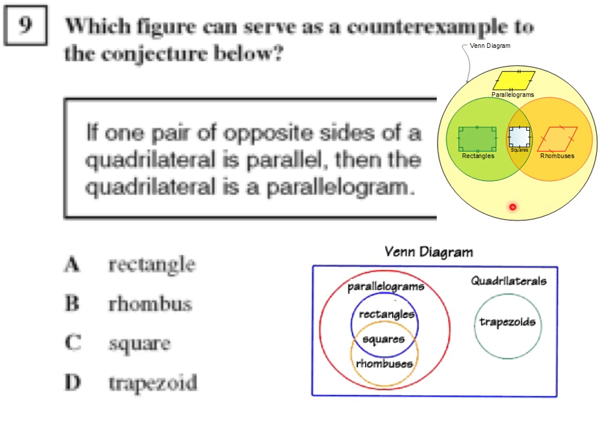You can actually see in this Venn diagram a little bit better the examples of what a rhombus is, a square, a rectangle, and parallelograms in general.